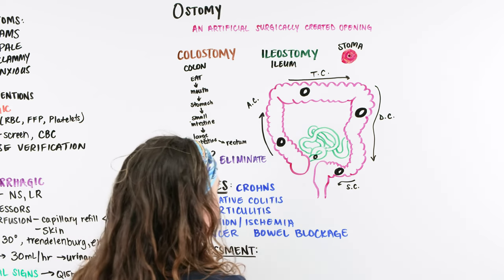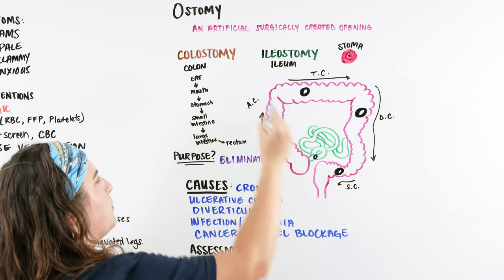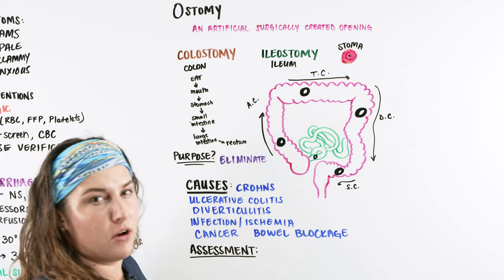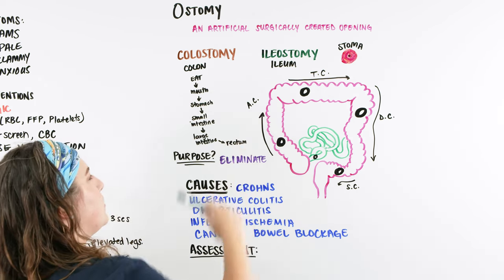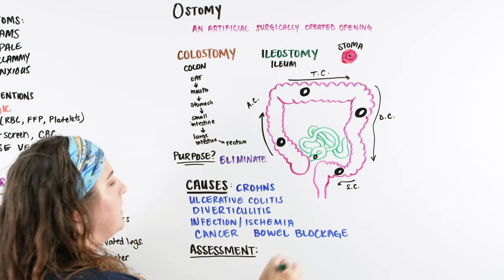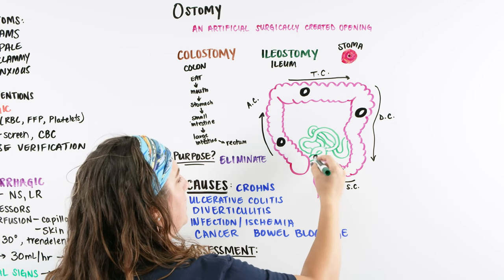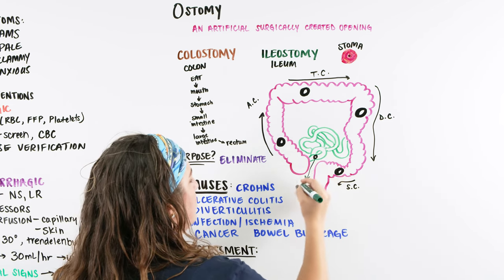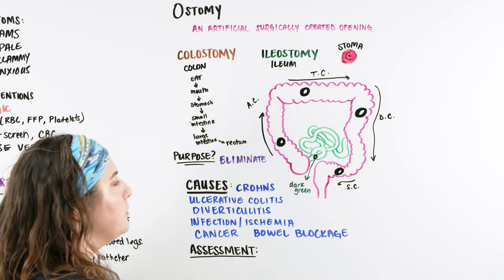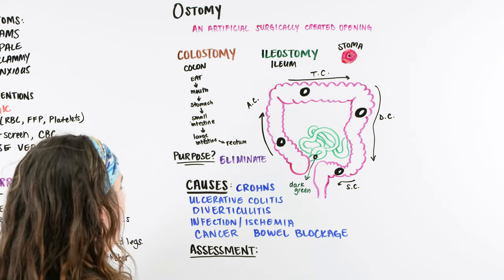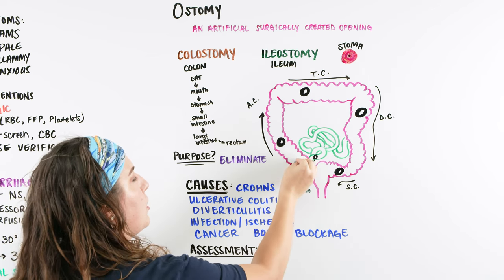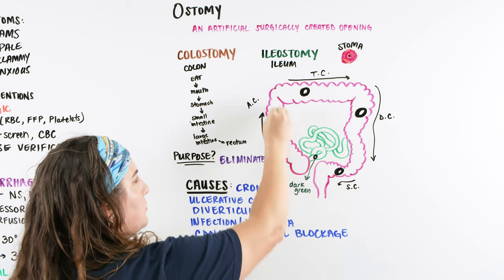If a patient has an ileostomy, think about what's happened so far: food is chewed, goes into the stomach, broken down by gastric acids and juices, and enters the small intestine in a pretty sludgy and watery state. So what comes out of the ileostomy is going to be mostly a darker green, watery, loose fluid — not many chunks.